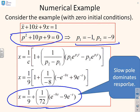So what's the key point here? The slow pole is dominating the response. Look, I've got a coefficient of 9 on the e^(-t), whereas only a coefficient of 1 on the e^(-9t). So the slow pole is 9 times bigger than the fast pole, as well as the fact that it decays much slower.